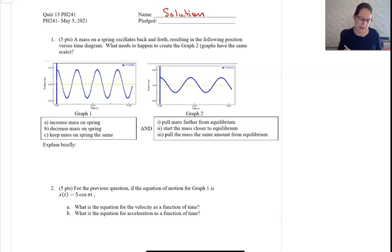When we look at these two graphs, we notice two different things. For graph two, the period is bigger, and also the amplitude is smaller.